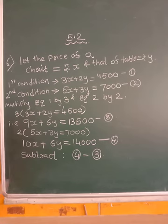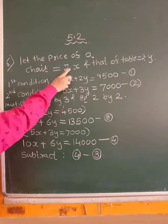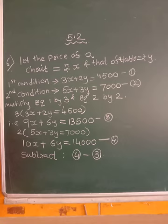Now see, let the price of a chair, this is a single chair, let it be x and that of a table, a table is equal to y. So x rupees costs 1 chair and y rupees costs 1 table. So what is the first condition?